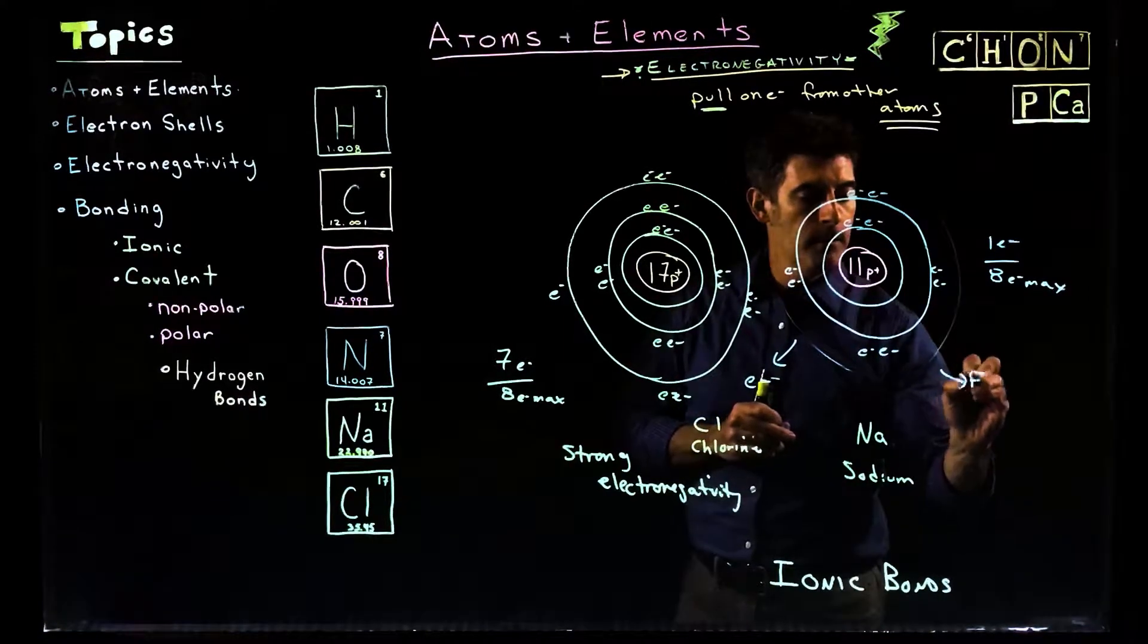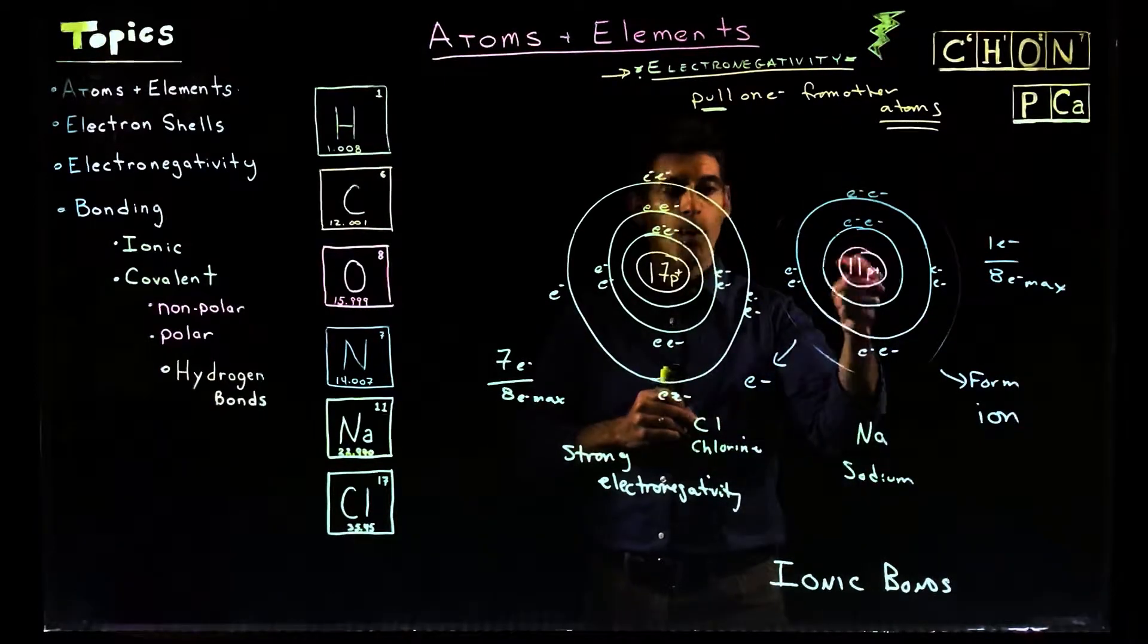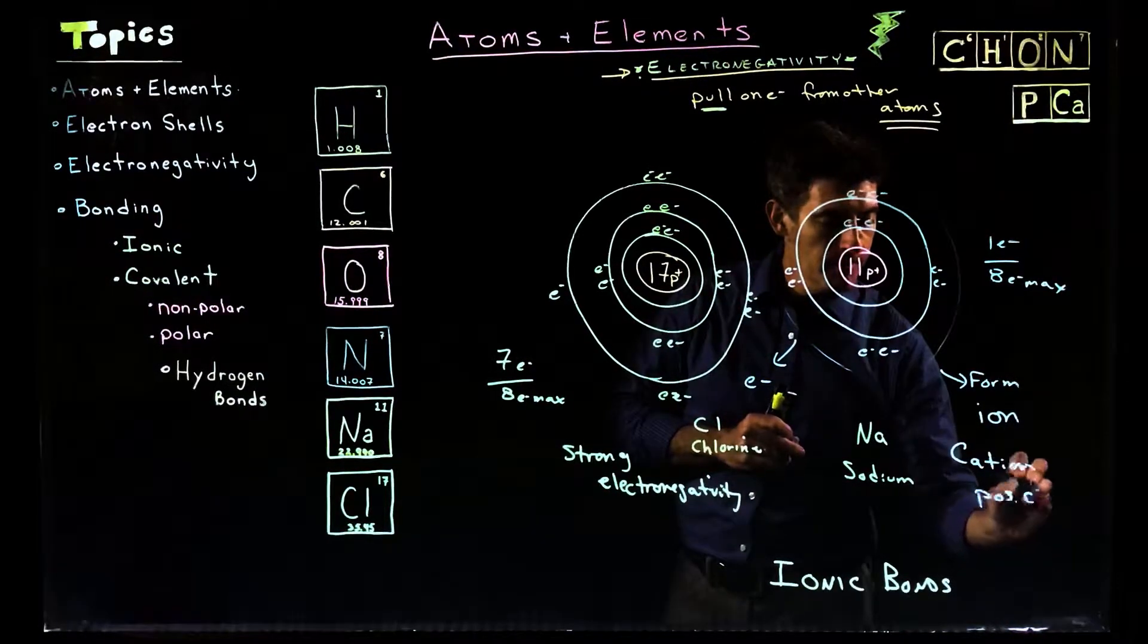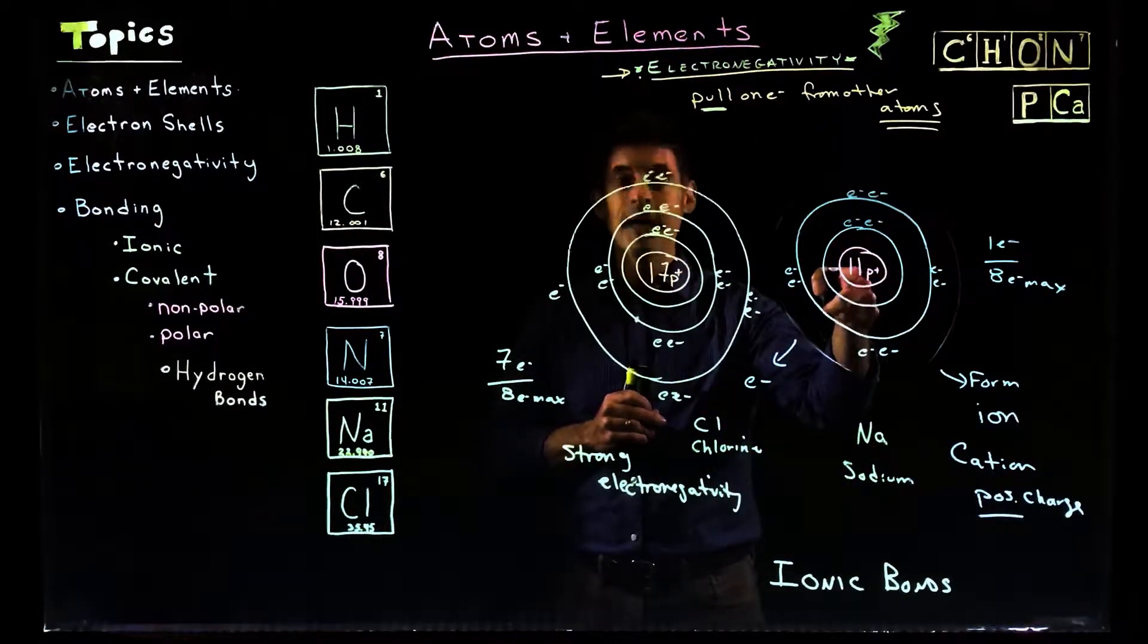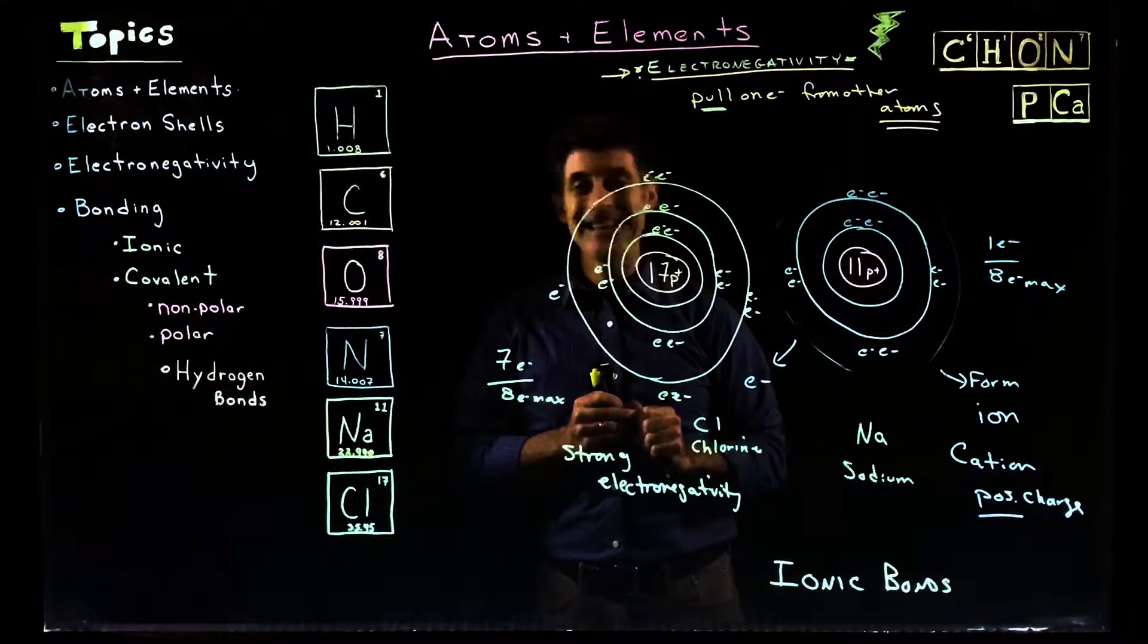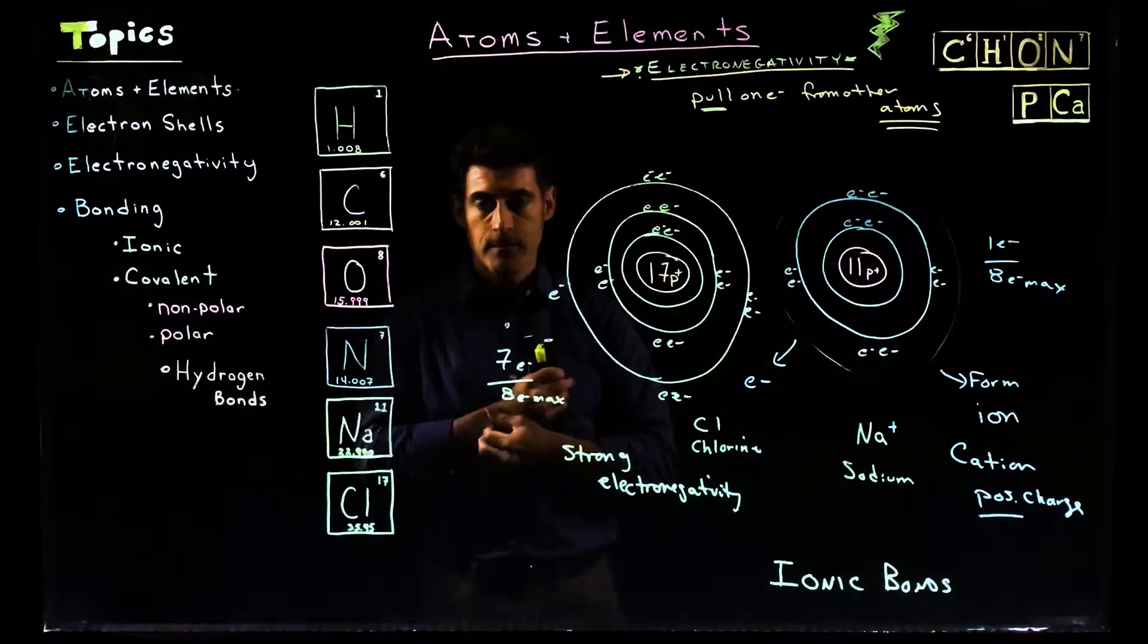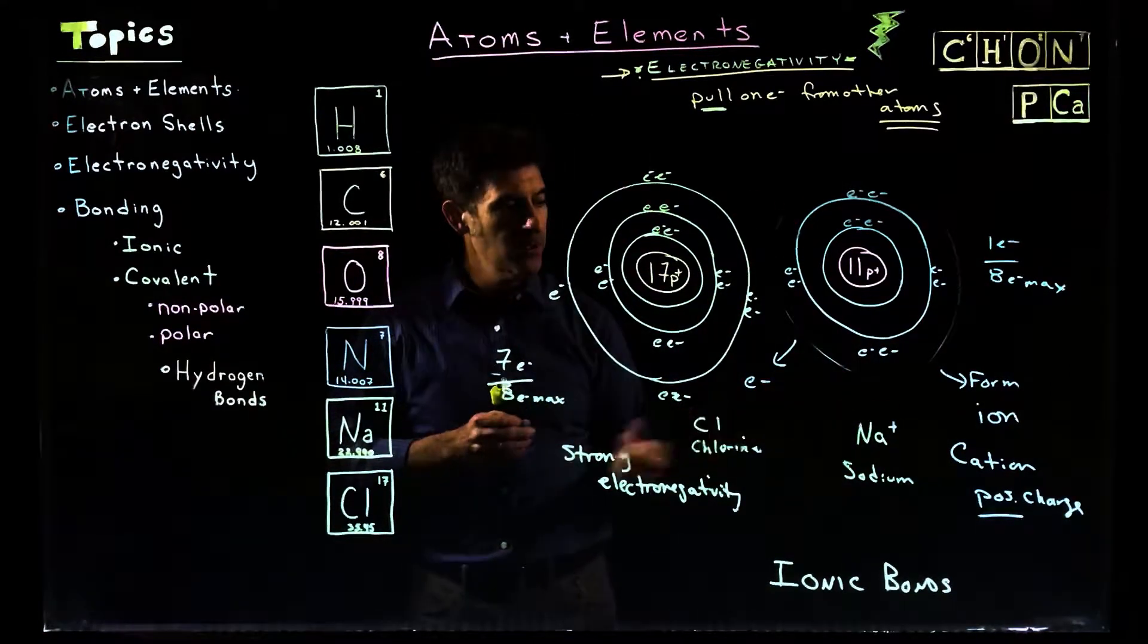So this is going to form an ion. We have more protons than electrons. In this case, it's going to be called a cation because it's going to have a positive charge. Why is the charge positive? Well, more pluses than minuses. 11 pluses, right? 10 minuses, 10 electrons, right? So this is going to turn into, instead of sodium just on its own, it's sodium with a plus. That's called a cation. The easy way to remember is the cat, the T. It's like a plus. So that's the positively charged ion.